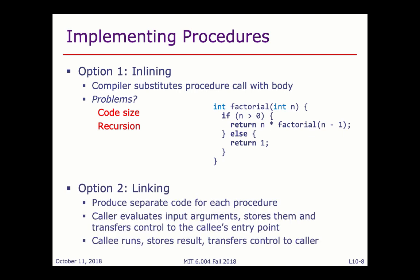To solve this, compilers typically use linking — producing separate code for each procedure and establishing a calling convention. This convention lets multiple procedures call each other in a standard way. In this model, the procedure that invokes another is called the caller; the procedure being invoked is the callee. The caller evaluates arguments, stores them where the callee can read them, and transfers control to the callee. The callee produces results and transfers control back when done.